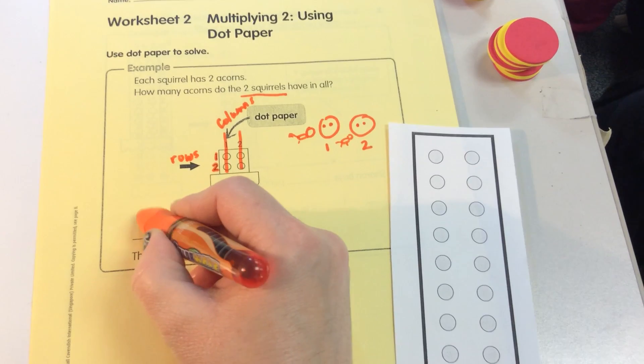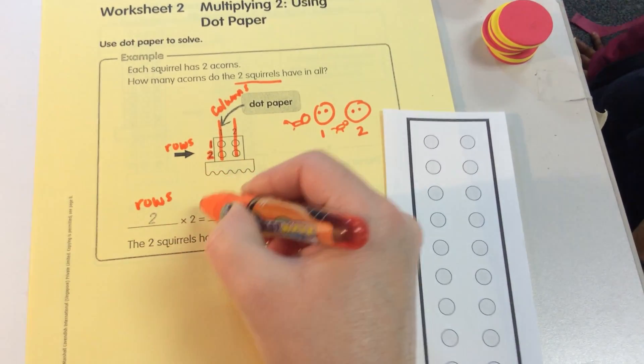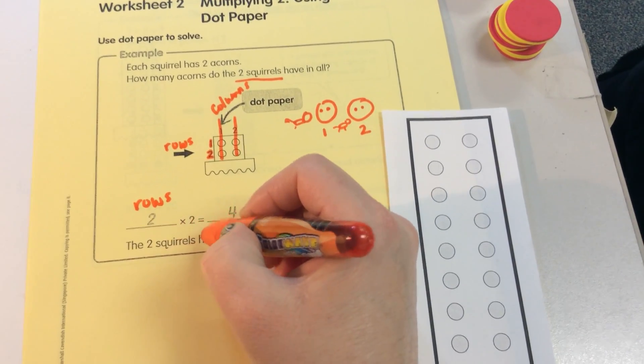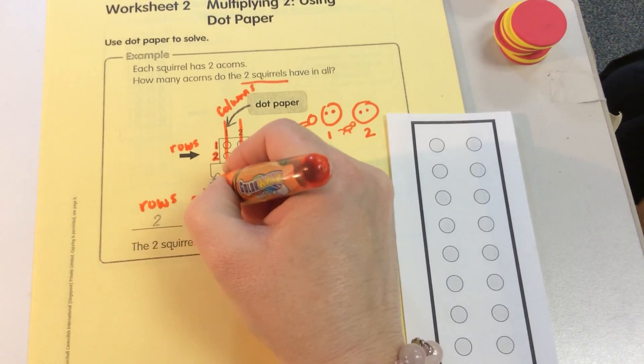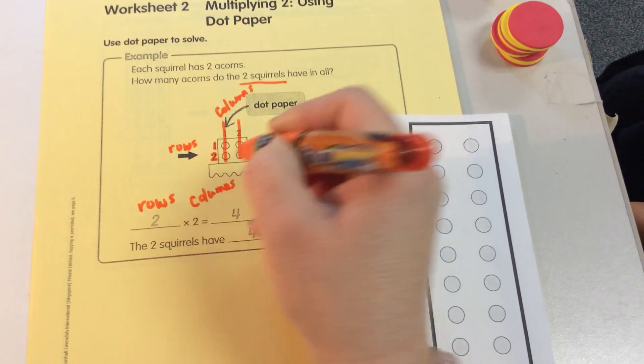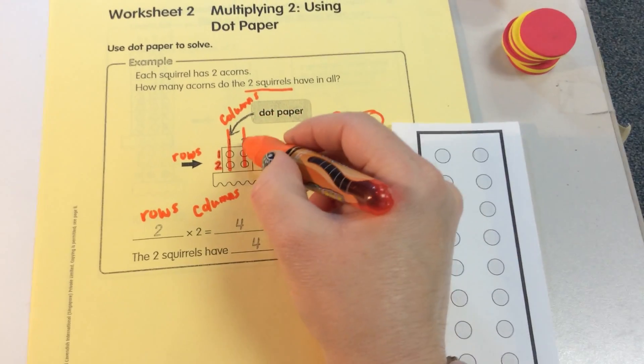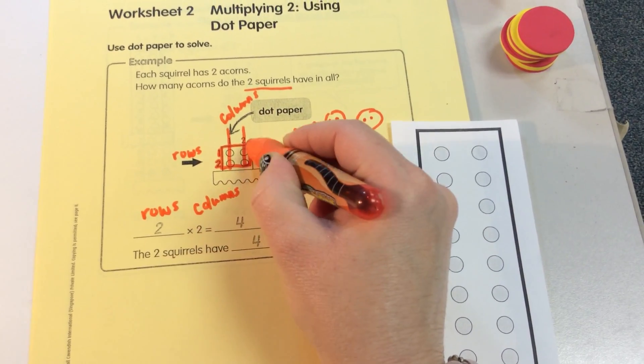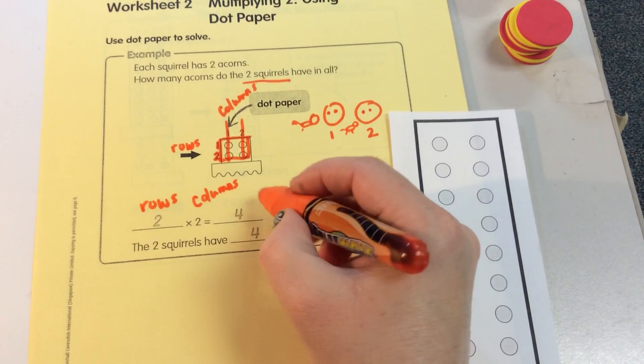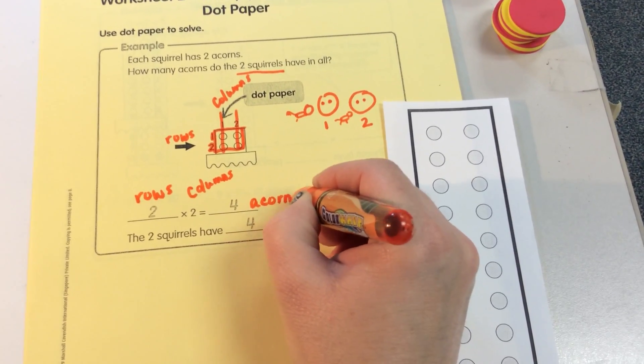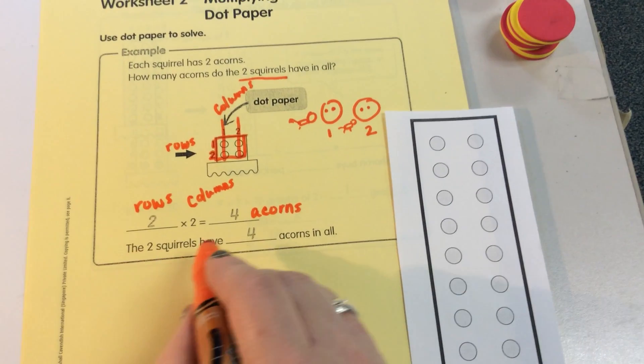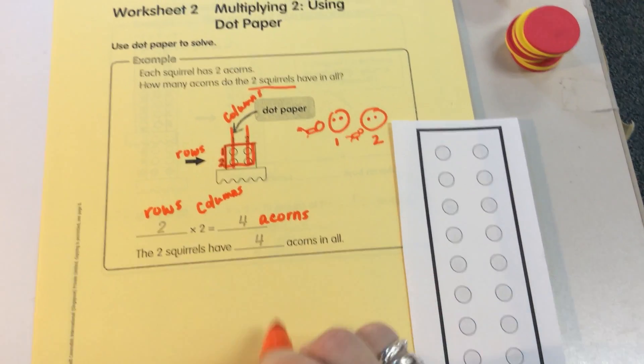So we know we have 2 rows and each row has 2 circles or 2 dots. These are the columns. So we have a total, a whole, of 4 and 4 acorns. So 4 acorns. Those squirrels have 4 acorns in all.